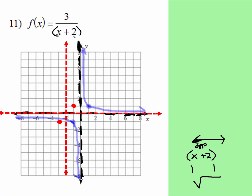What happens when there is a plus or minus number in the denominator? We just did that — how you would write that is 'shift left two.' Now, 3 is in the numerator instead of 1. Remember the original parent graph has 1 over x. Well, it kind of stretches or multiplies by a factor of three. So let's think about that — let's go back to our original point. If we multiplied that by three...